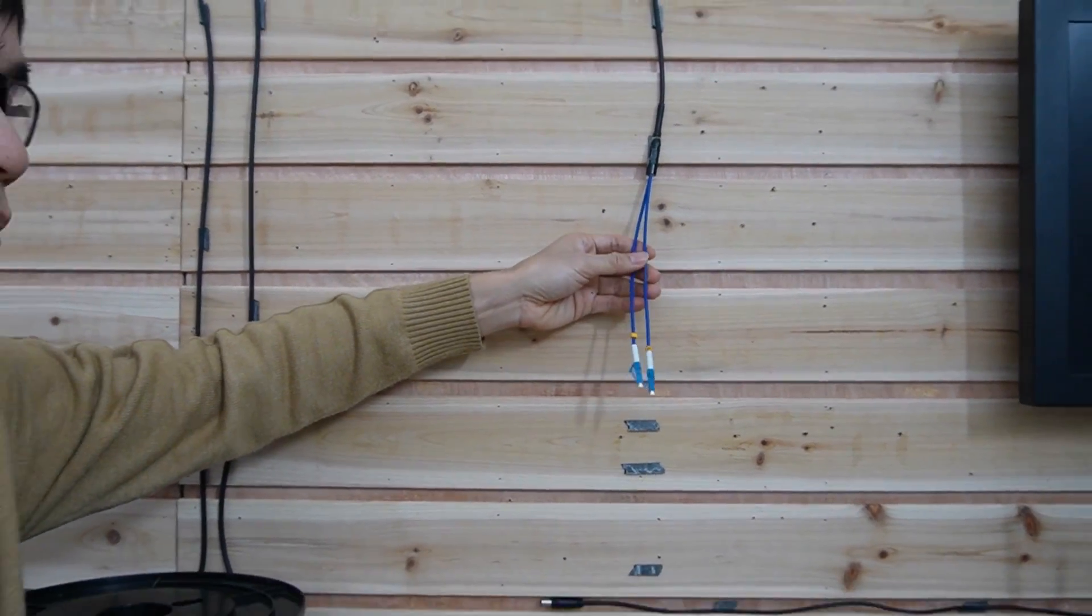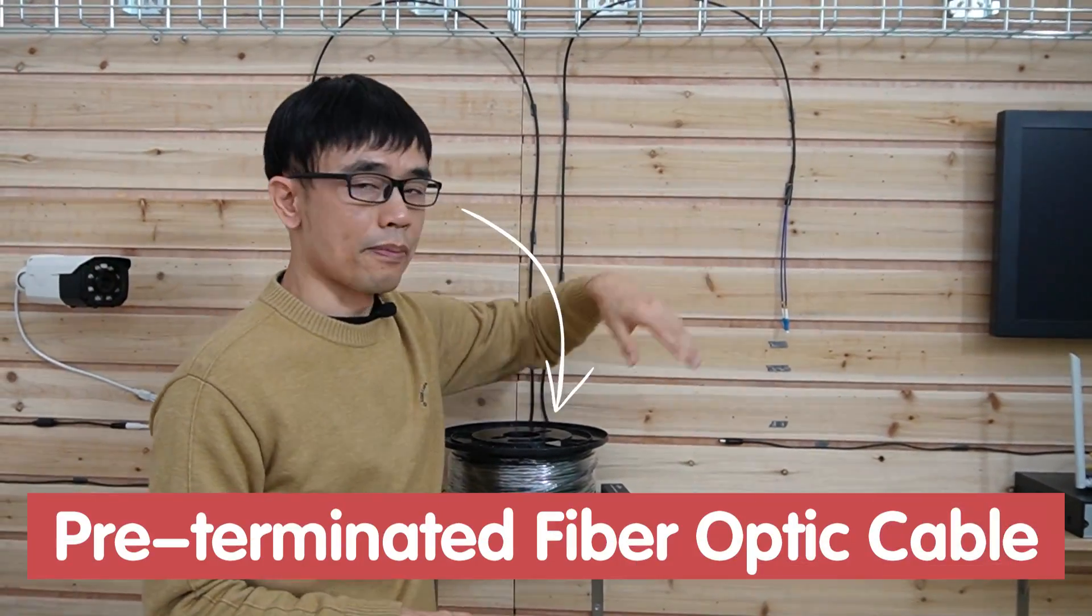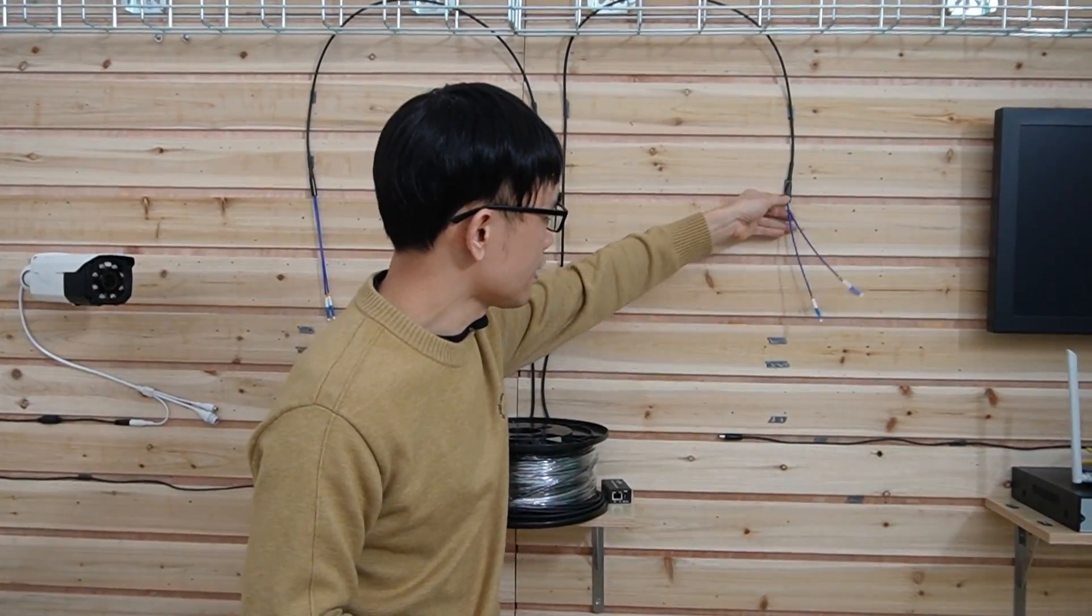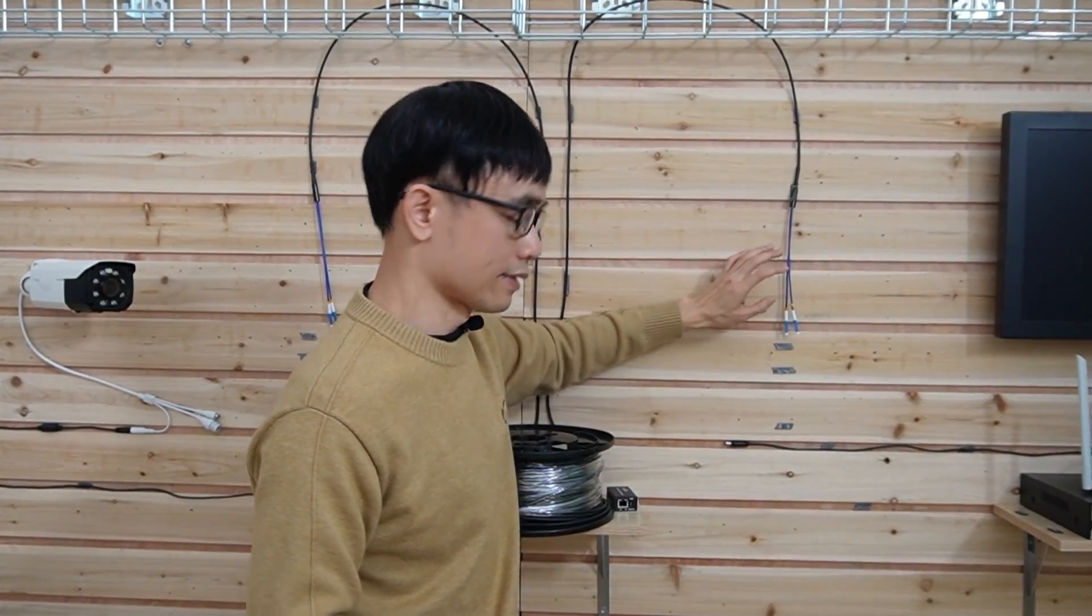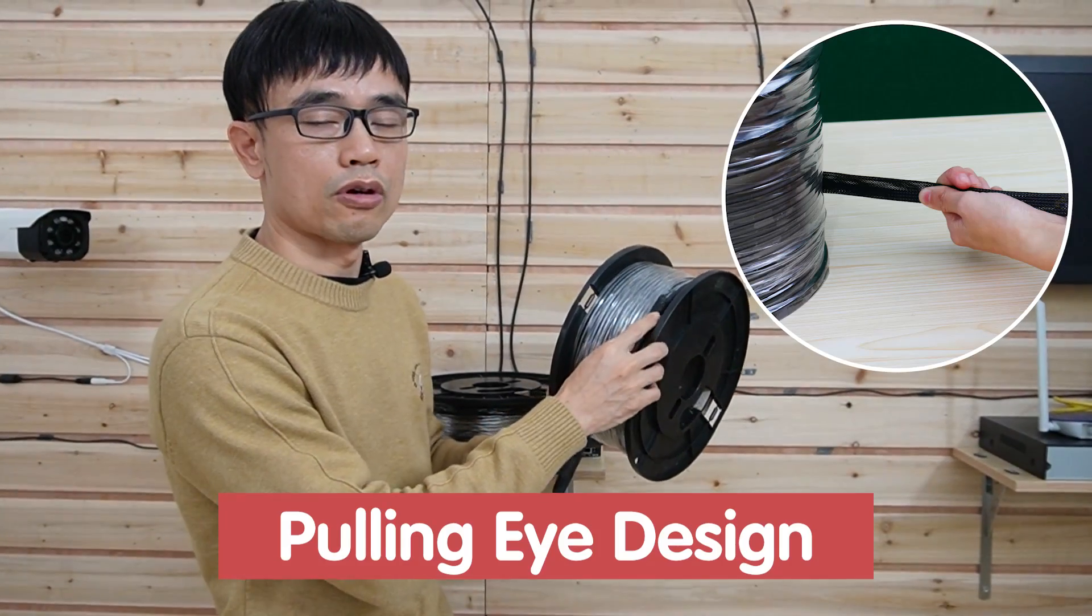We cannot crimp the fiber optic cable because it's just plastic. If we overbend or crimp the cable, it will damage the cable immediately. In this video, I'm using pre-made fiber optic cable, so the connector is made in the factory. It's also 100% tested. The cable comes with a pulling eye so we can pull the cable over the conduit or just overhead management.